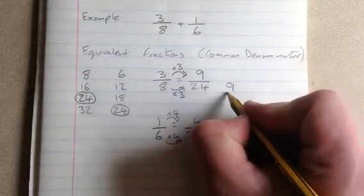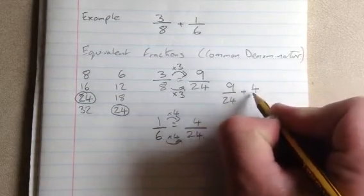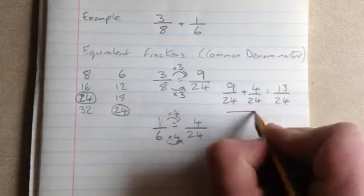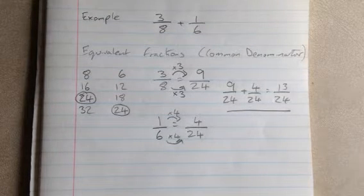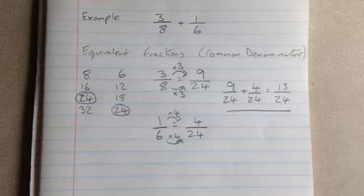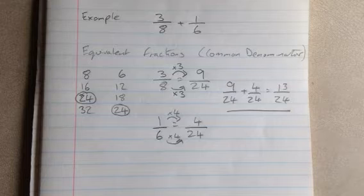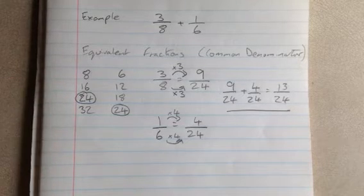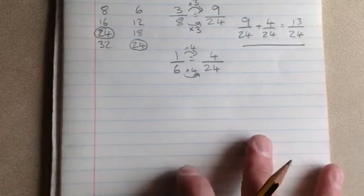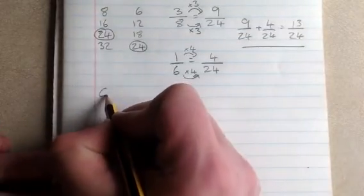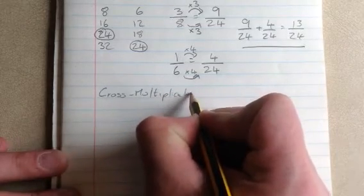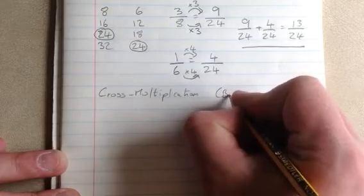Now we just need to add those two. So 9 twenty-fourths plus 4 twenty-fourths is 13 twenty-fourths, and that's our answer. That's the best way of doing the adding of fractions. It can be a little bit complicated if you're unsure of equivalent fractions or finding the common denominator. So I'm going to show you a second method as well — this method is known as cross multiplication, or the butterfly method.